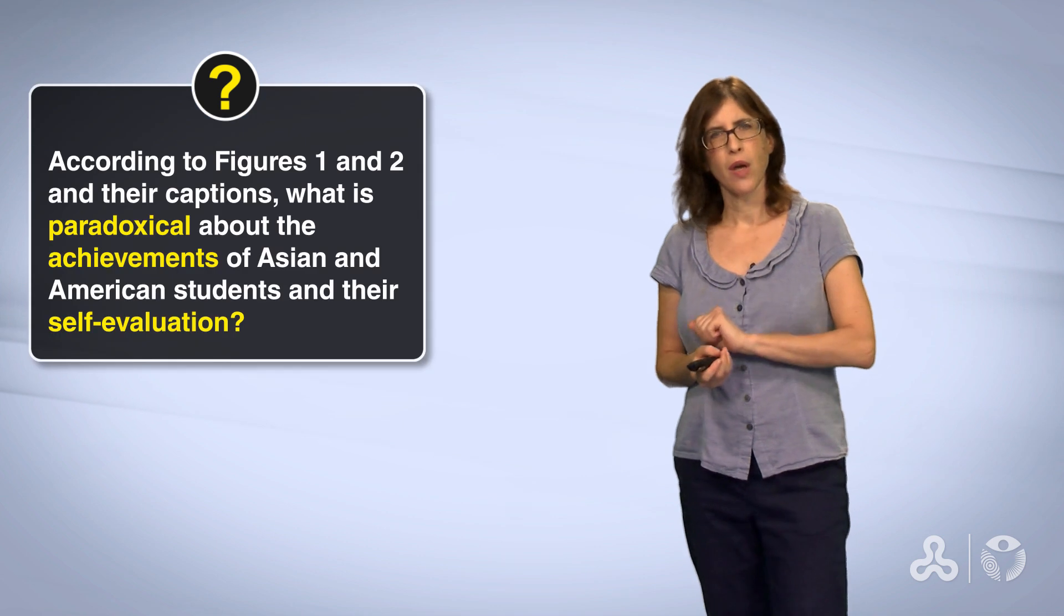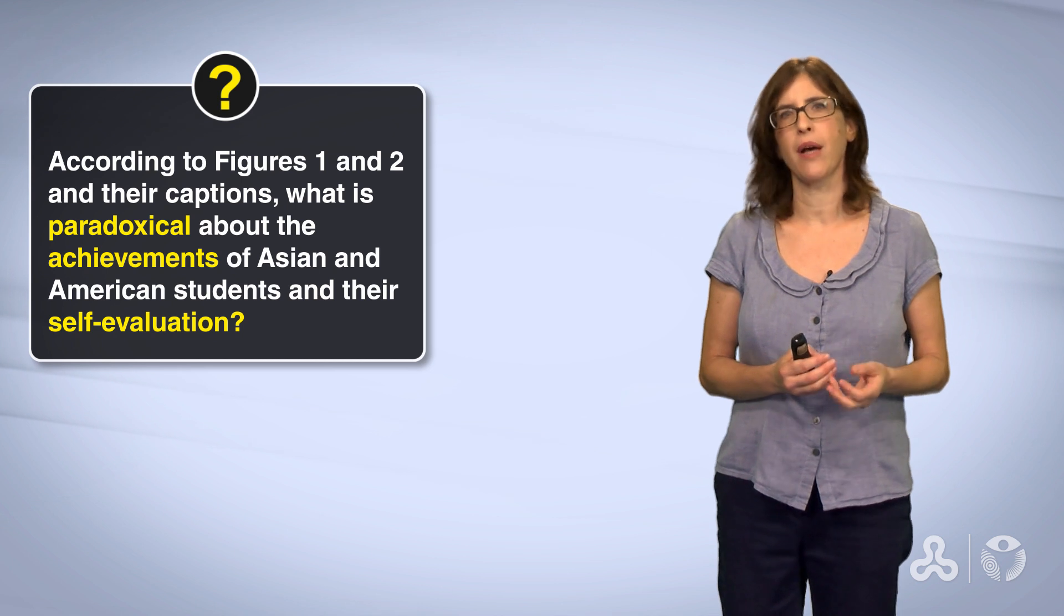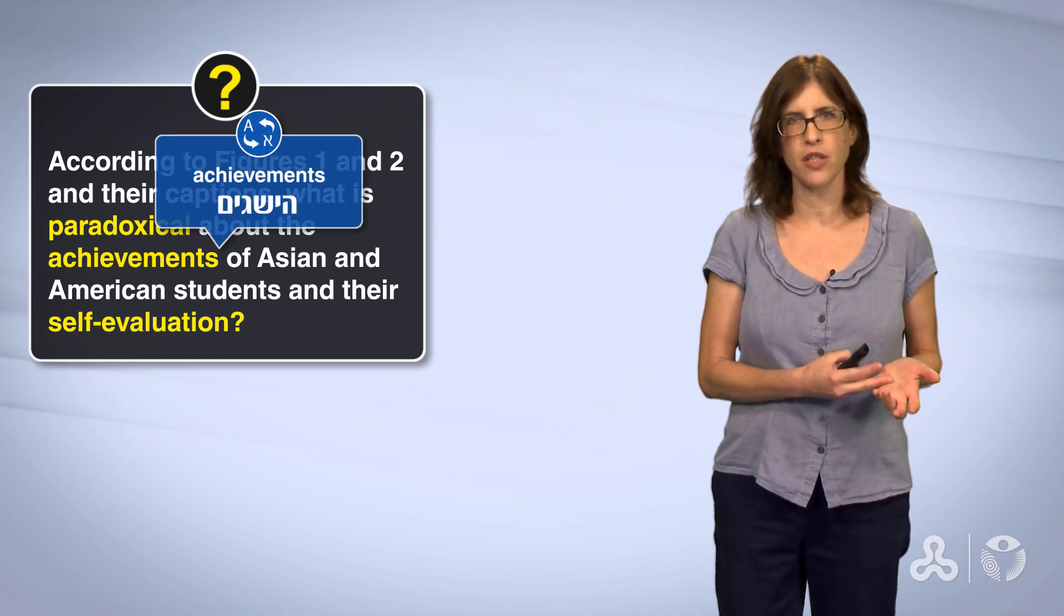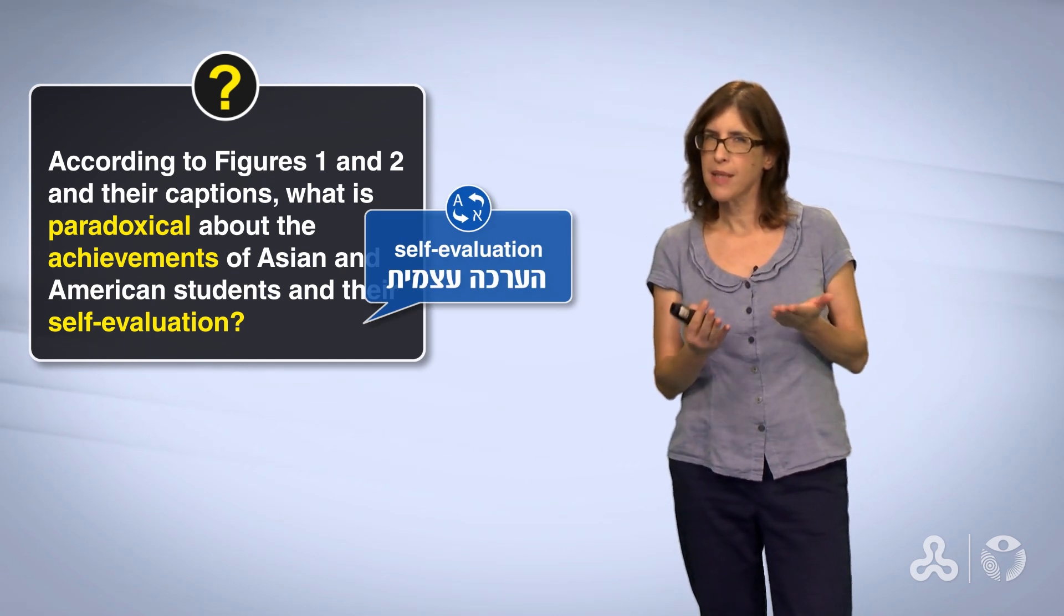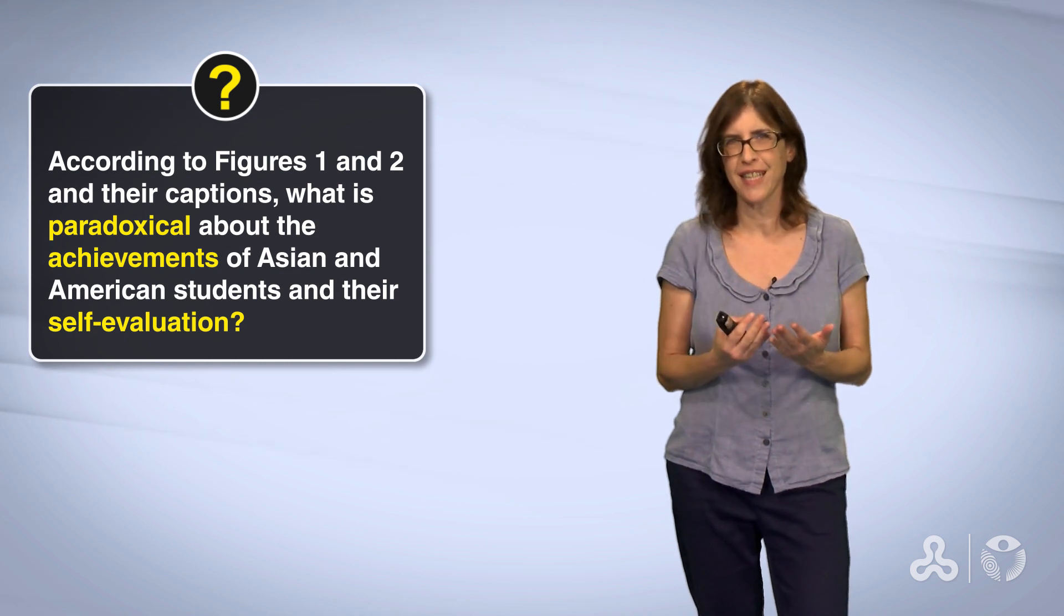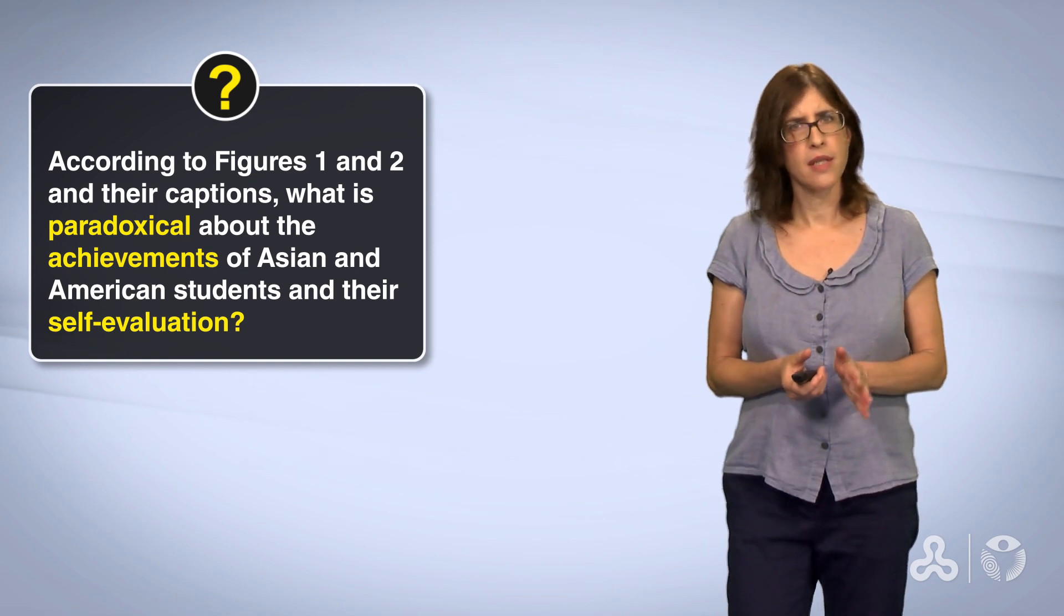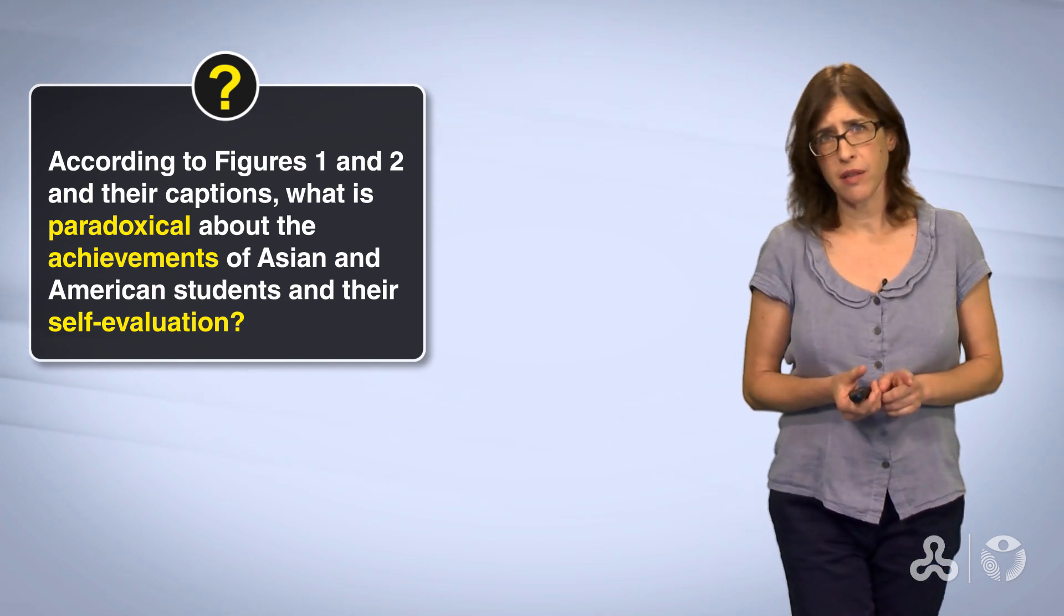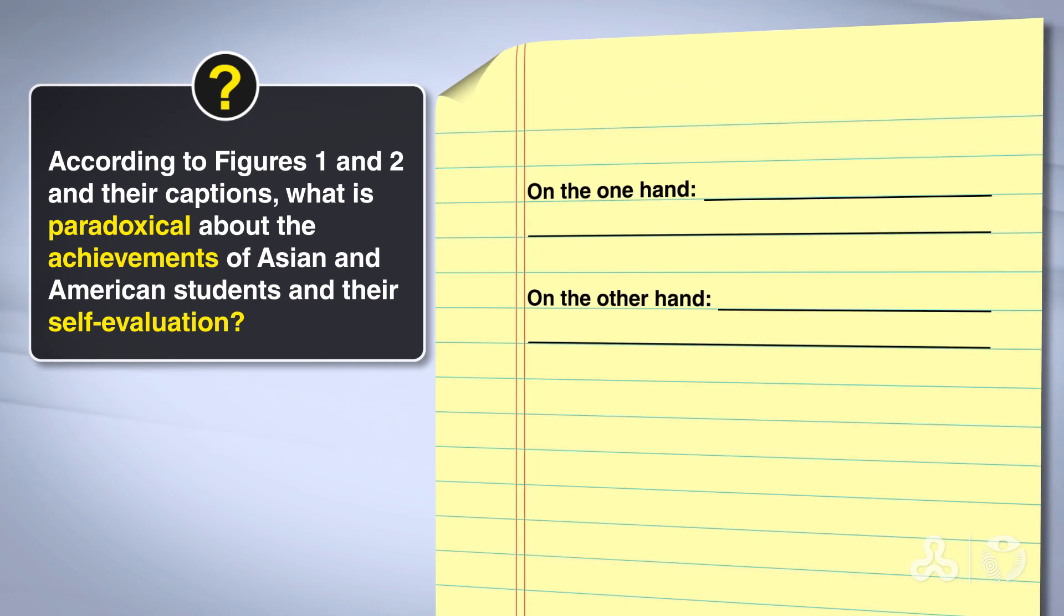Now, this is a bit strange. There seems to be a paradox here. According to figures 1 and 2 in their captions, what is paradoxical about the achievements of Asians and American students and their self-evaluation? We seem to see something that isn't rational. Take a minute to answer. It's important to practice writing. Write the paradox this way: On the one hand, on the other hand.